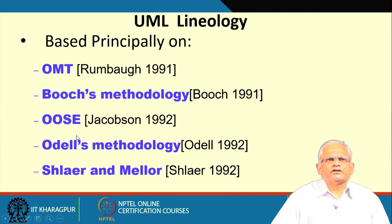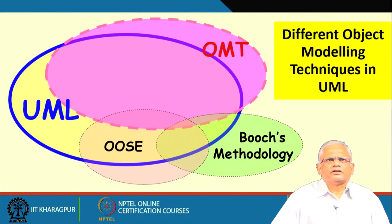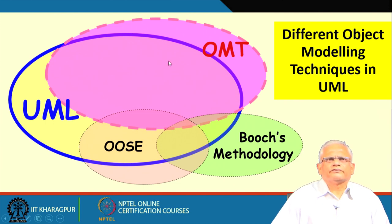UML drew upon these various methodologies - many of their symbols were assimilated into UML. UML also proposed some symbols and grammar rules not present in any of these methodologies. Pictorially, UML to a large extent drew upon OMT, which was one of the most popular techniques used in the 90s; a large part of UML is similar to OMT.